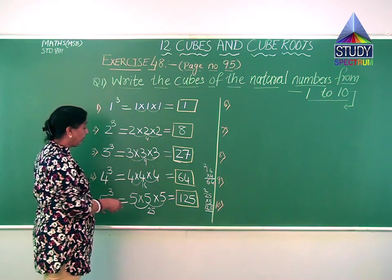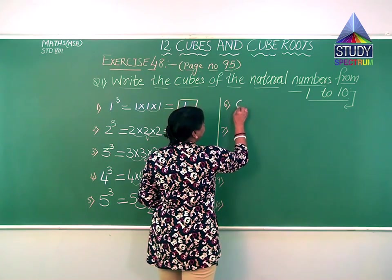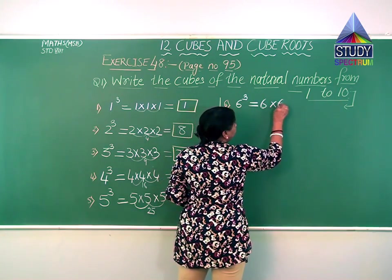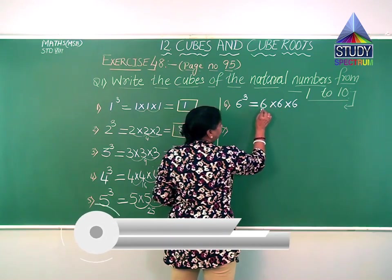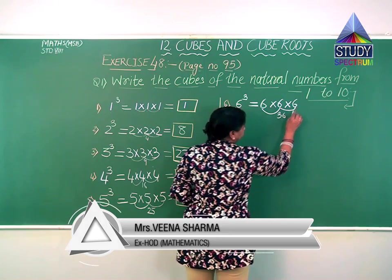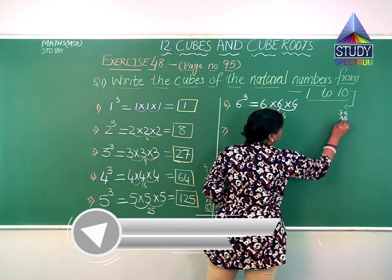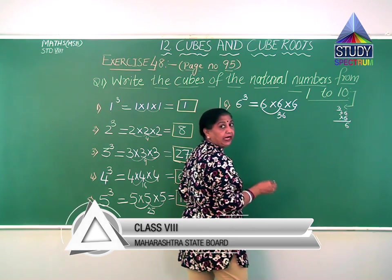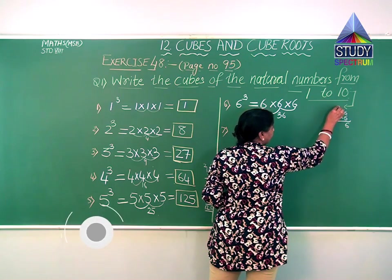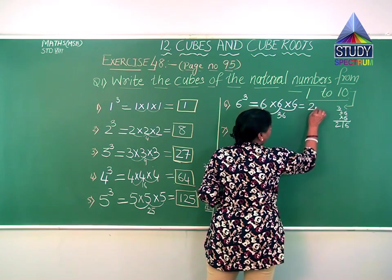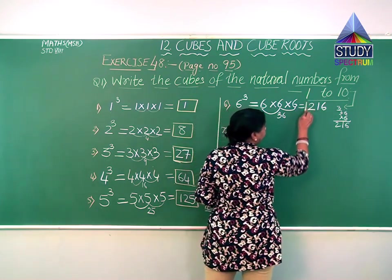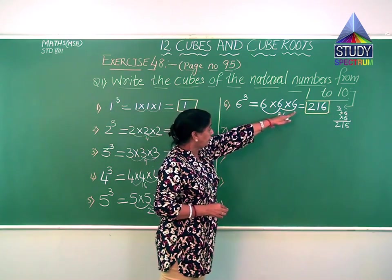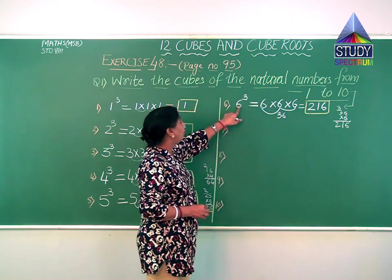Let us solve the remaining 5. The 6th natural number: write power 3 and multiply 6 into 6 into 6. Working: 6 into 6 is 36, then 36 into 6. Six sixes are 36, carry 3; 6 threes are 18, 18 plus 3 is 21. So the answer is 216. When we multiply 6 three times, the product is 216 — that is the cube of 6.